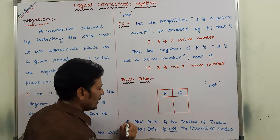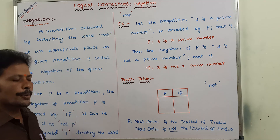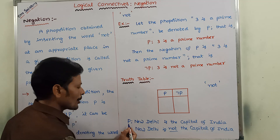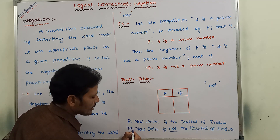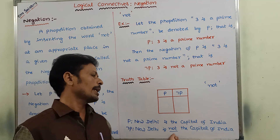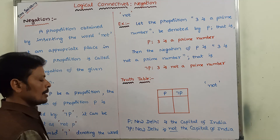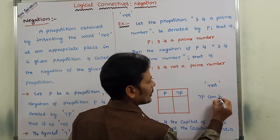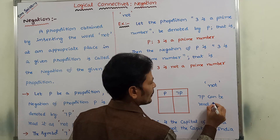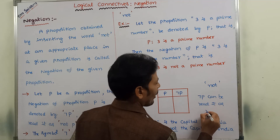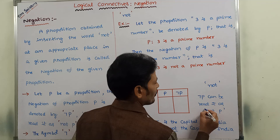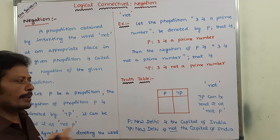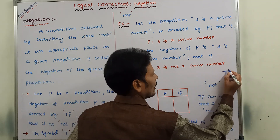The given proposition can be denoted by capital P, where P contains the statement 'New Delhi is the capital of India.' The negation of this statement can be denoted as ¬P, which means 'New Delhi is not the capital of India.' ¬P can be read as 'not P.' The symbol ¬ represents the word 'not.'